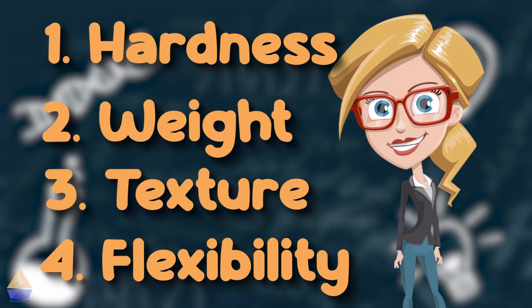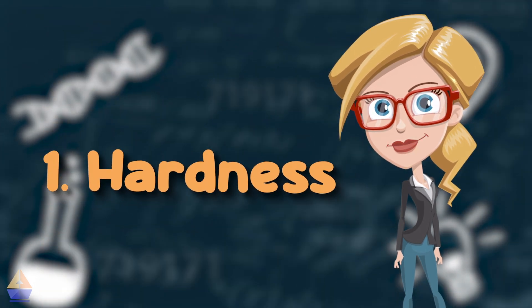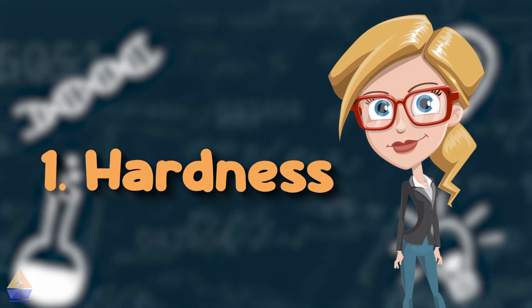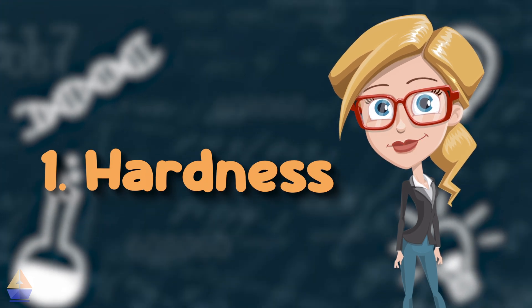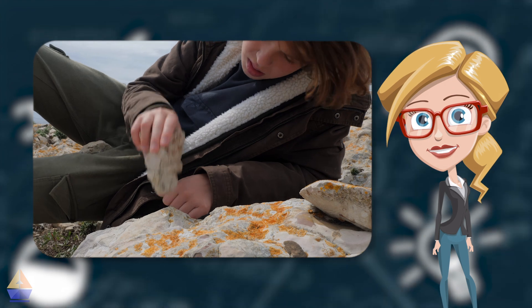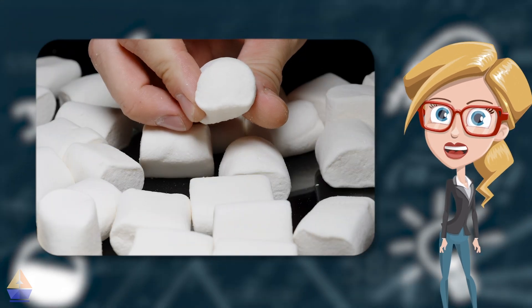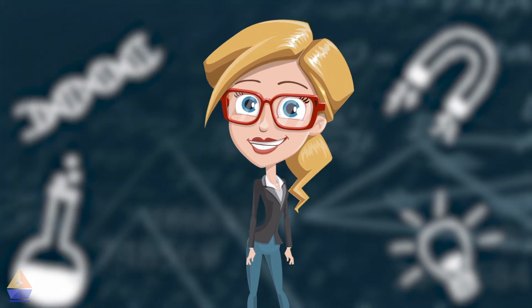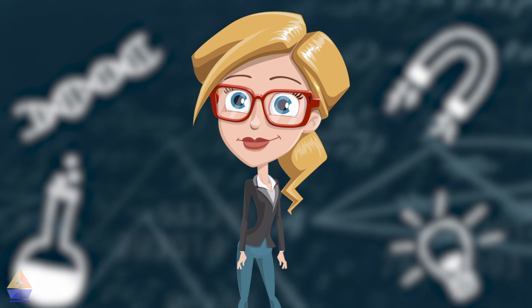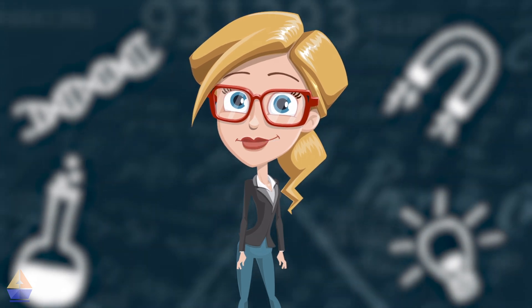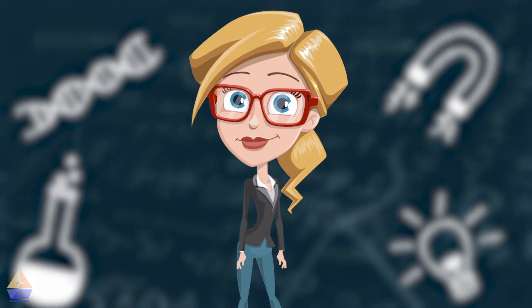Let's start with hardness. Hardness is how tough an object is. For example, a rock is very hard, but a marshmallow is soft. Can you think of something that's hard?